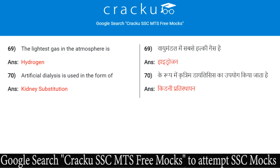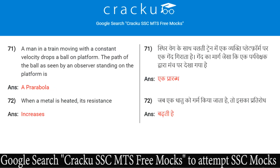Artificial dialysis is used in the form of kidney substitution. A man in a train moving with a constant velocity drops a ball on a platform. The path of the ball as seen by an observer standing on the platform is a parabola.